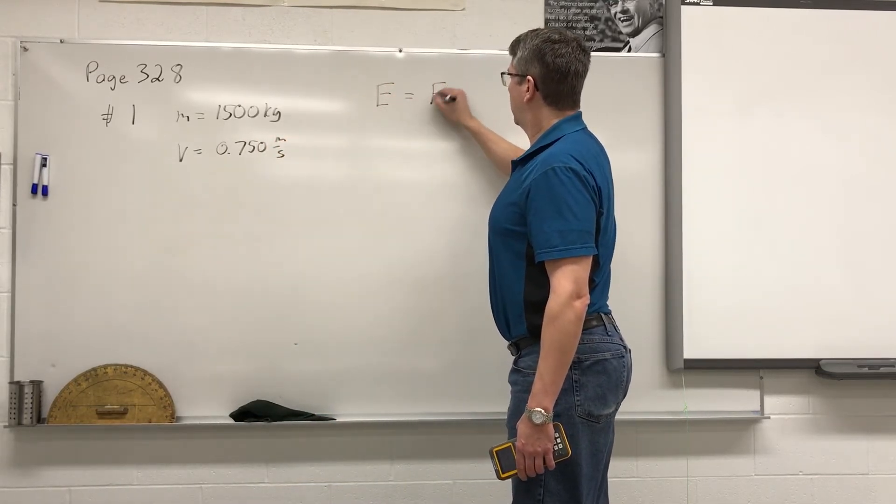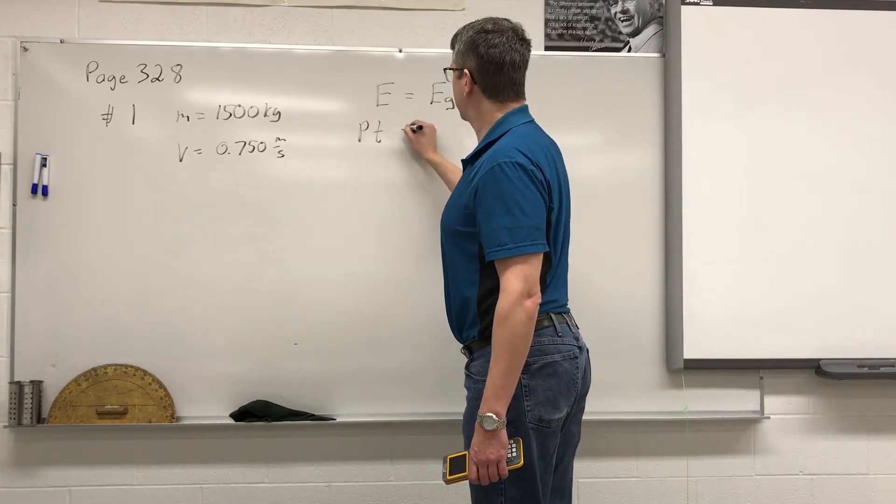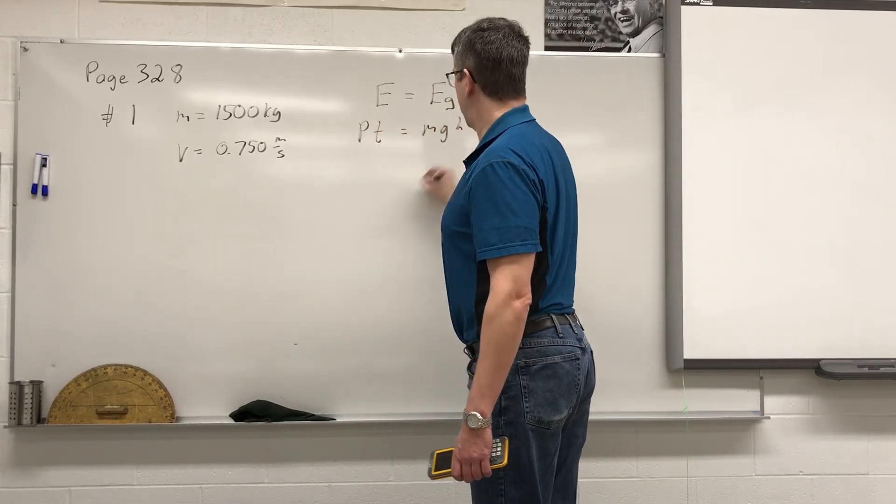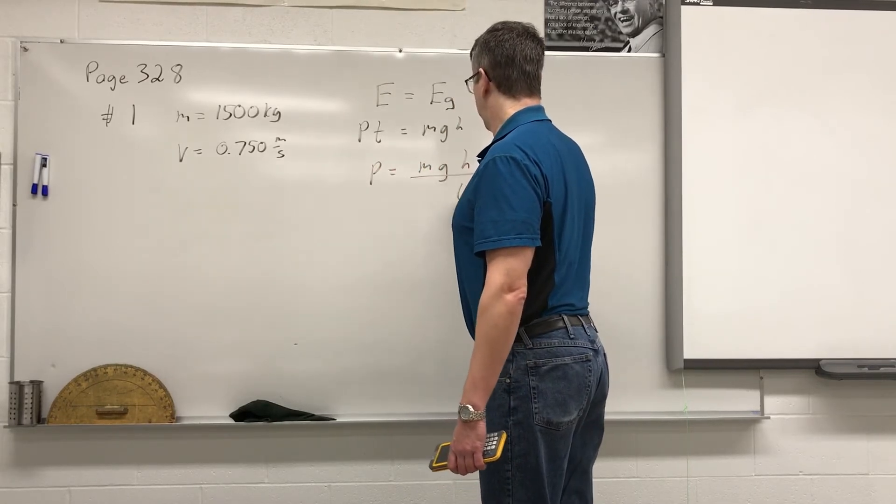So the energy put out by the motor will equal the gravitational potential energy. So we have power multiplied by time is mgh. To get the power, it's the mass times gravity times the height all divided by the time.